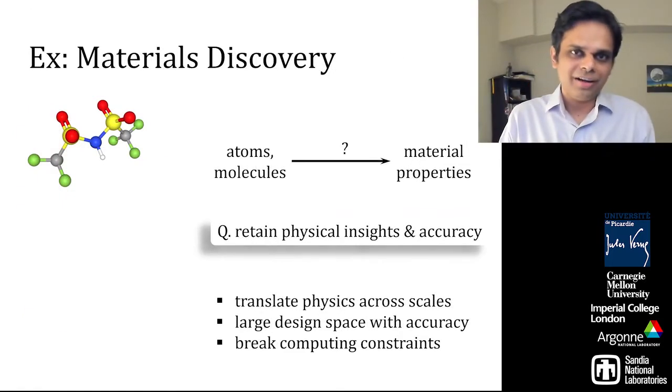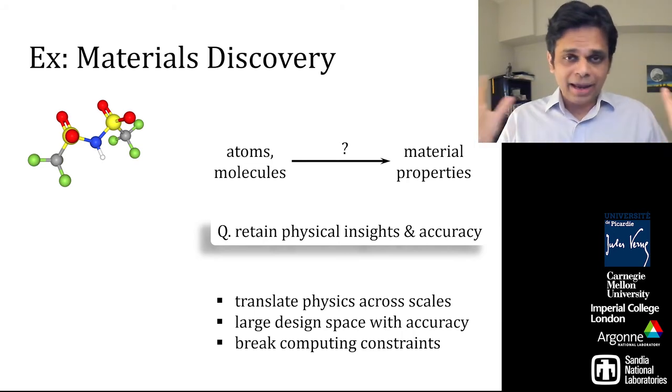Another area where scientific machine learning can have a major impact is in the design of molecules and materials for electrochemical energy applications. Now, if we had abundant compute, one could calculate all of the structural variations and then use that to identify the materials that would give us the properties that we want.